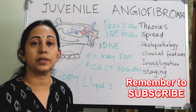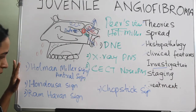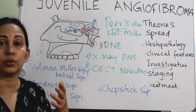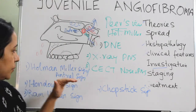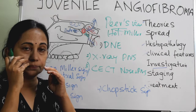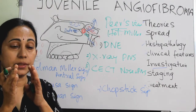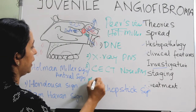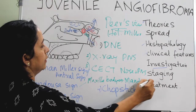There are also radiological signs in JNA. The Holman-Miller sign, or Antral sign, can be seen on CT scan as anterior bowing of the posterior wall of the maxilla when the maxillary antrum is completely filled with the mass. The Hondosa sign is seen when JNA extends from the maxillary antrum into the infratemporal fossa, causing widening of the space between the body of the maxilla and the ramus of the mandible.